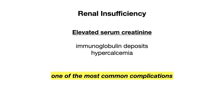The next is renal insufficiency, which is usually found through an elevated serum creatinine. This is a result of two different things: immunoglobulin deposits in the kidney as well as hypercalcemia. This is actually one of the most common complications of multiple myeloma.